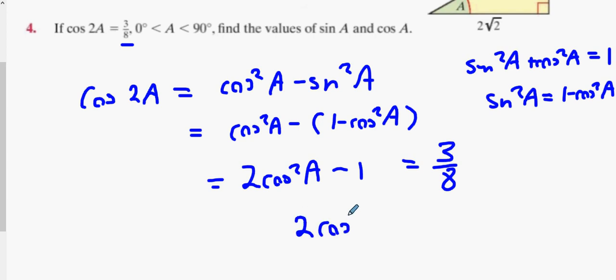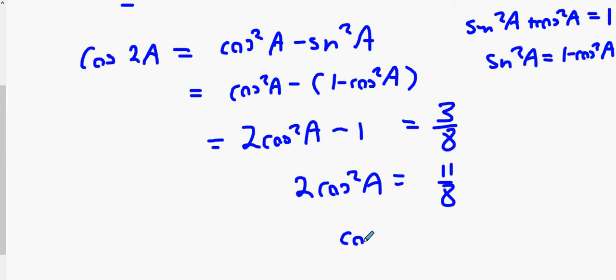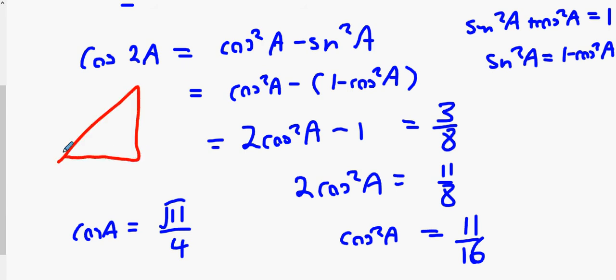So what does that mean? 2cos²A is equal to what? 1 plus 3/8. Yep, divided by 2. Square root. Square root 11 and what's root 16?